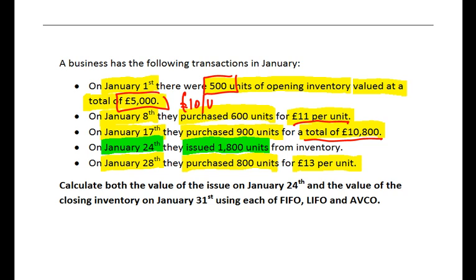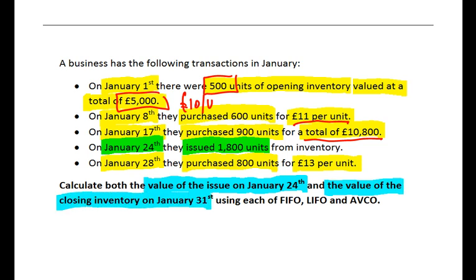We're asked to calculate both the value of the issue on January the 24th — the 1,800 units issued — and also the value of the closing inventory on January the 31st, so how much is left at the end of the month. We're going to do it in three ways: FIFO, LIFO, and AVCO — the three different inventory valuation methods you need to deal with in your studies. So basically I'm looking for six numbers, the value of the issue and the value of closing inventory under each of three different methods.